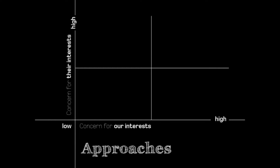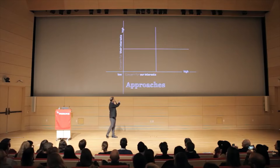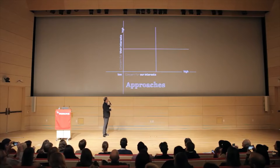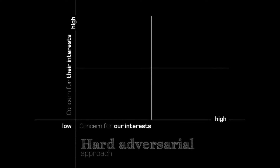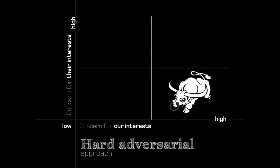There are different approaches we can take to negotiation, depending on how much emphasis you put on trying to meet your interests, how much concern you show for your interests, and how much concern you show for the other side's interests. This effectively gives you four approaches from low to high. We could pay intense concern to our own interests, try to get what we want with no regard for the other, and you get this rather hard adversarial approach.